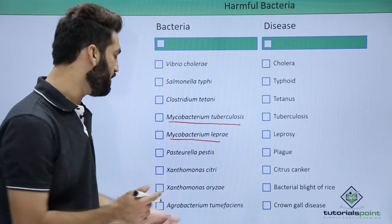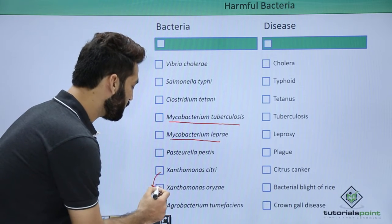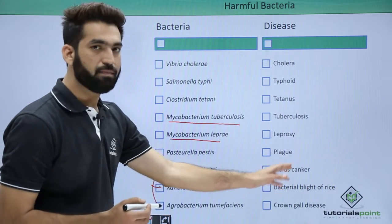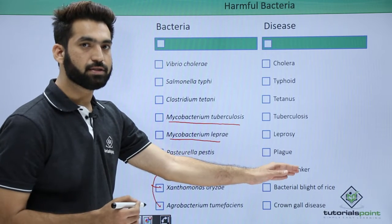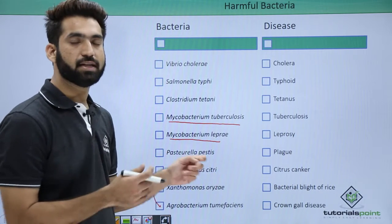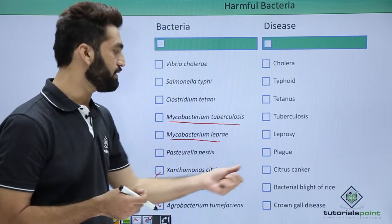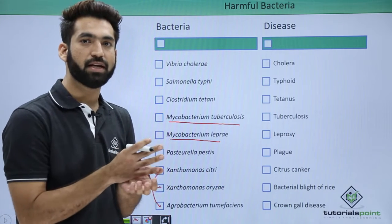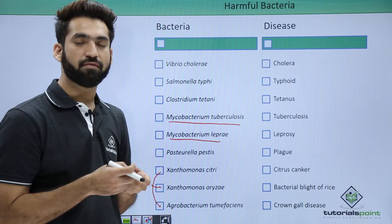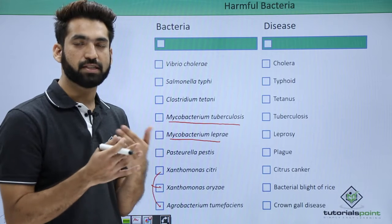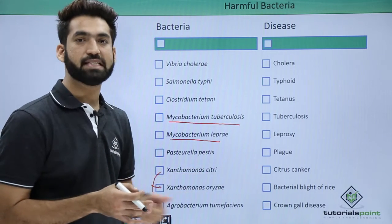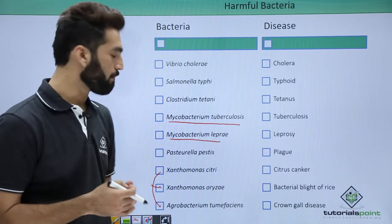From here we move to bacteria that cause diseases in plants. Xanthomonas citri causes citrus canker disease. In citrus canker, lemon leaves develop spots due to bacterial infection, and photosynthesis is impaired in those affected leaves.